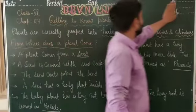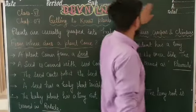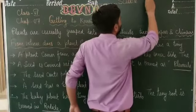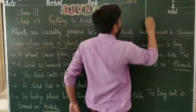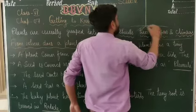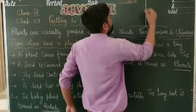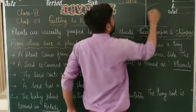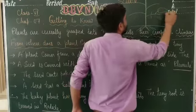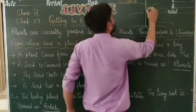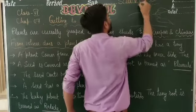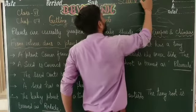Previous class में — जैसे Class 5 में — आपने plant के parts पढ़े होंगे। देखिए, यह roots होते हैं, यह branches हैं, इन branches पर और sub-branches होती हैं, उन पर leaves होती हैं, फिर fruits और flowers होते हैं।